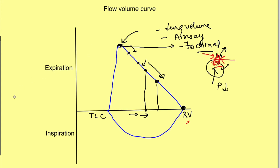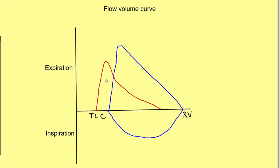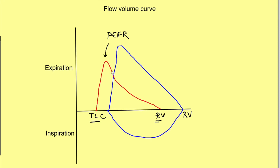Now let us look at certain diseases affecting the flow-volume curve. In the red graph, the peak expiratory flow rate has decreased. The lung volume is more — total lung capacity is more and residual volume is more, so it is operating at a higher lung volume. Despite more lung volume, expiratory flow rates are less. Since lung volume is not the problem, the problem must be the airways. This depicts a disease with an airway problem — that is obstructive lung disease.